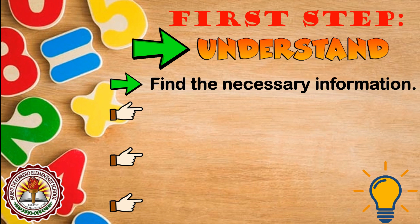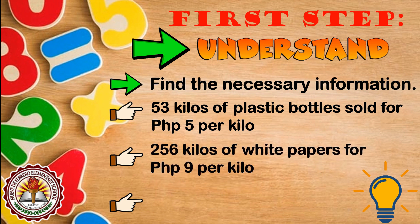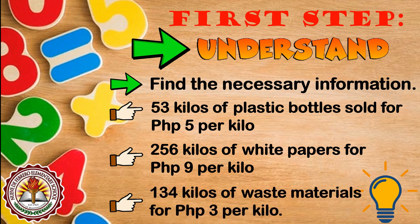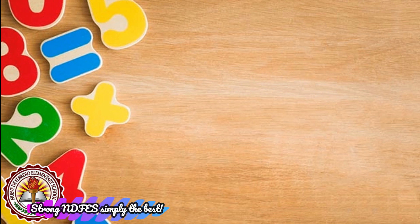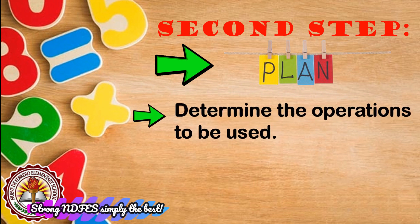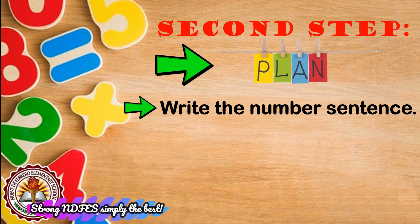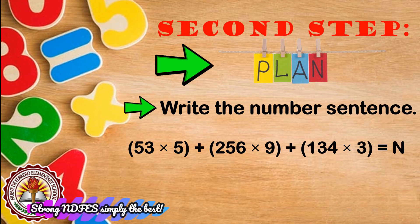The necessary information: 53 kilos of plastic bottles sold for 5 pesos per kilo, 256 kilos of white papers for 9 pesos per kilo, and 134 kilos of waste materials for 3 pesos per kilo. Step 2: Plan. The operations to be used are multiplication and addition. The number sentence is: (53 × 5) + (256 × 9) + (134 × 3) = n, where n is the total earned by the Ecosabers program.